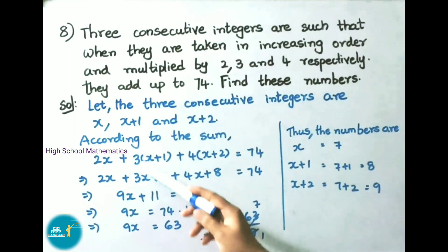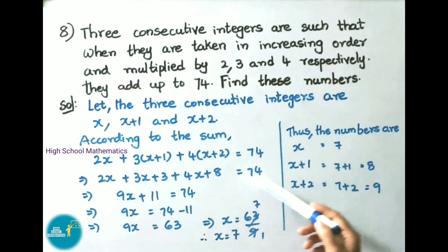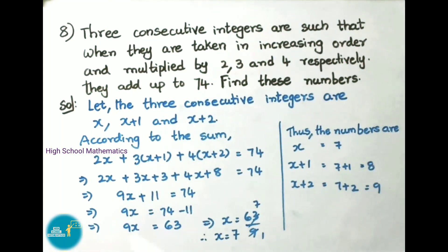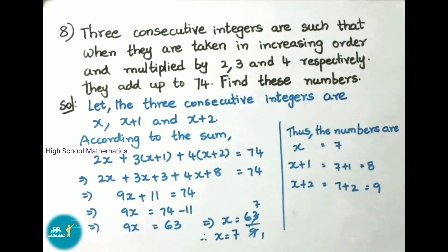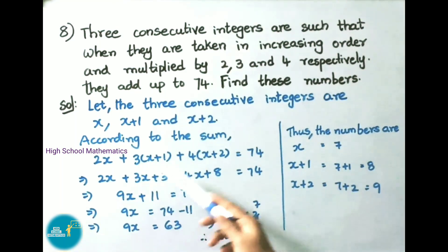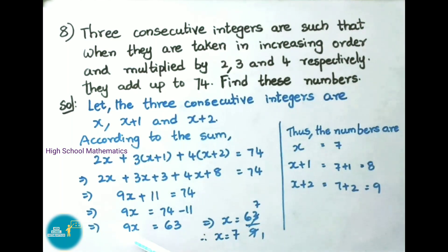Expanding: 2x plus 3x plus 3 plus 4x plus 8 equals to 74. That implies 2x plus 3x plus 4x is 9x, plus 3 plus 8 is 11, that equals to 74. That implies 9x equals to 74 minus 11, which is 63. Next x equals to 63 by 9. 9 is going to multiply; on transposing it becomes divided by. 9 times 7 is 63. Therefore x value is 7.